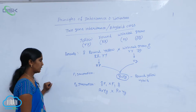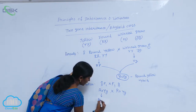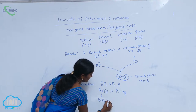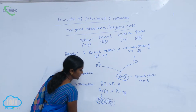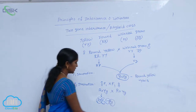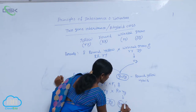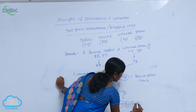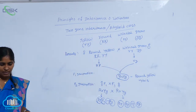From the F1 cross, four types of gametes are produced: capital R capital Y, capital R small y, small r capital Y, and small r small y. From the other F1 parent also, four types of gametes are produced: capital R capital Y, capital R small y, small r capital Y, and small r small y. The resultant progeny is observed in the Punnett square or checkerboard.